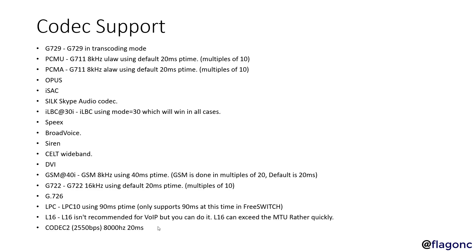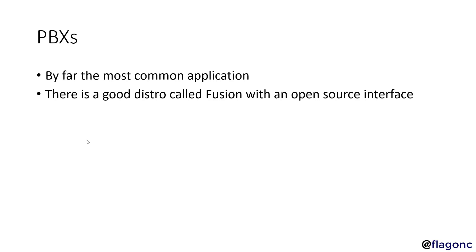Codec support includes a long list. The main ones are PCMU, PCMA, G.729, and Opus — these four cover most needs. There are many other codecs available for interoperability requirements. For PBX deployments, there's a good distribution called FusionPBX with an open-source web interface. If you're used to FreePBX-style web interfaces, FusionPBX is similar — it's based on FreeSWITCH and lets you build your own PBX.